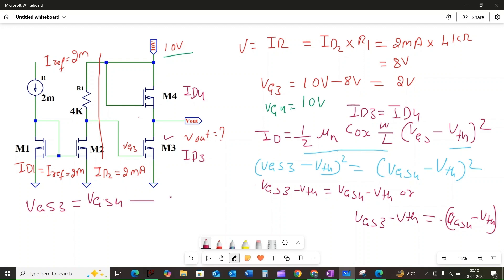We can note this as equation 1. Now let's express the gate-to-source voltage in terms of voltages we know. For M3, the gate-to-source voltage VGS3 is simply its gate voltage minus its source voltage. Here the source is connected to the ground, so the source voltage of M3 will be 0. Therefore, VGS3 is equal to VG3 minus 0 volts, which equals 2 volts.